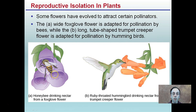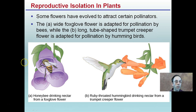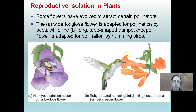Flowers can select for their pollinators. Some flowers have evolved to attract only certain species to help them pollinate. The white foxglove flower is adapted for bees, and this long tube-shaped flower is better for hummingbirds. This is an example of flowers selecting for certain pollinators, and that is reproductive isolation because the bees will not be pollinating these flowers — this flower tries to match the habits of the hummingbird rather than the bee.